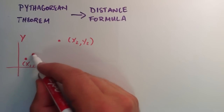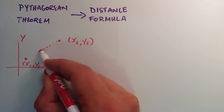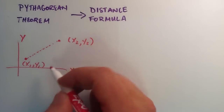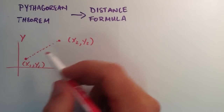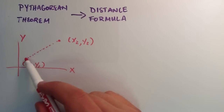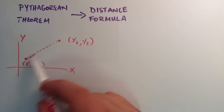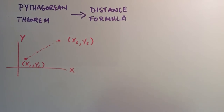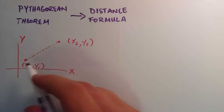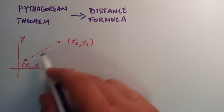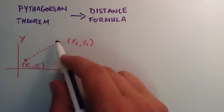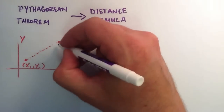I'll draw a dotted line between the two of them. The distance formula we're going to derive will tell us what the distance of this dotted line is. So what we need to do is draw a right triangle involving this line, so that we can use the Pythagorean Theorem.